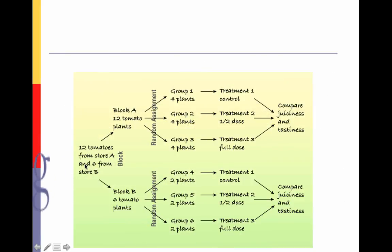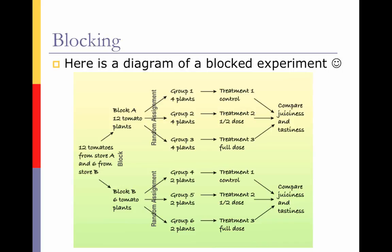Here is a diagram of a similar situation. In this case, we bought 12 from one store and six from a different store. We block this out by having Block A with 12 tomato plants and Block B with six tomato plants. Then we would have four plants in each of three groups, randomly assigned. Each treatment consists of the control, half dose, and full dose, and then you compare. In the second block, we randomly assign two plants to each group — one group gets the control, the half dose, and the full dose — and again we compare.